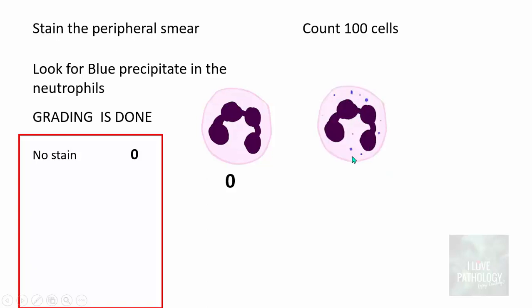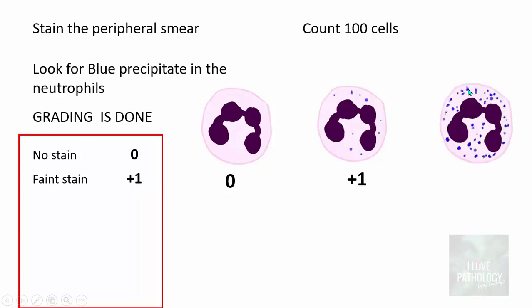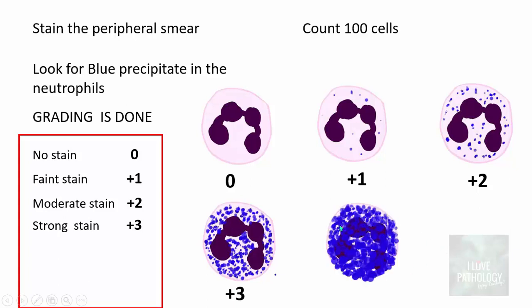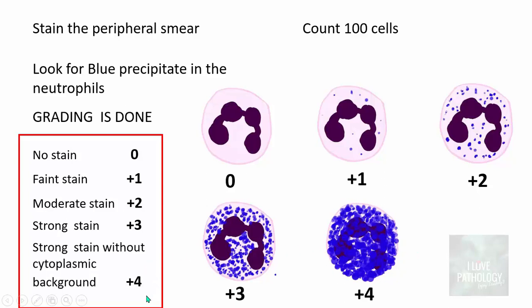If there is a faint reaction with faint precipitates, you call it plus 1. If you have a moderate stain, you call it plus 2. If the stain is quite strong, more than moderate activity, you call it plus 3. And if the precipitate is so intense that the whole cytoplasm is studded and you cannot see any nuclear detail, you give a plus 4 — a very strong stain where even nuclear details may not be visible.